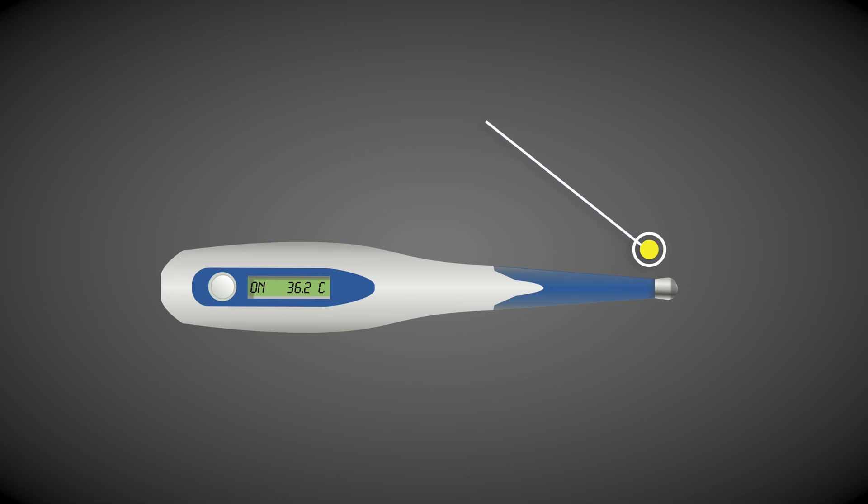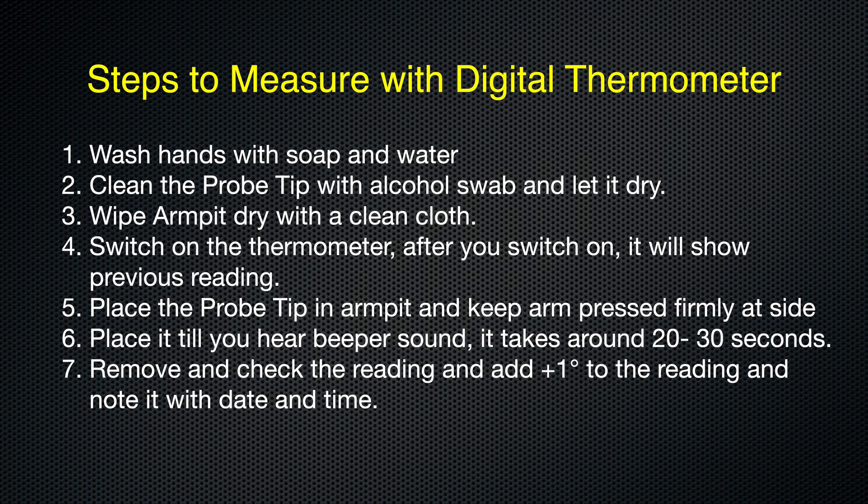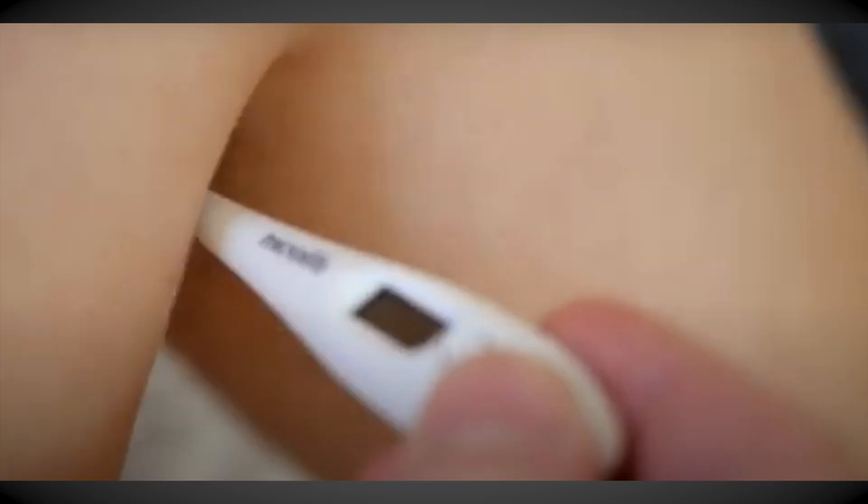While you wash your hands with soap and water, it's important to clean the probe tip of the digital thermometer with a sanitizer and allow it to dry. This is the probe tip — clean it with sanitizer, allow it to dry, and wipe dry with a clean cloth. When you switch on the thermometer, it will beep showing you the previous reading.